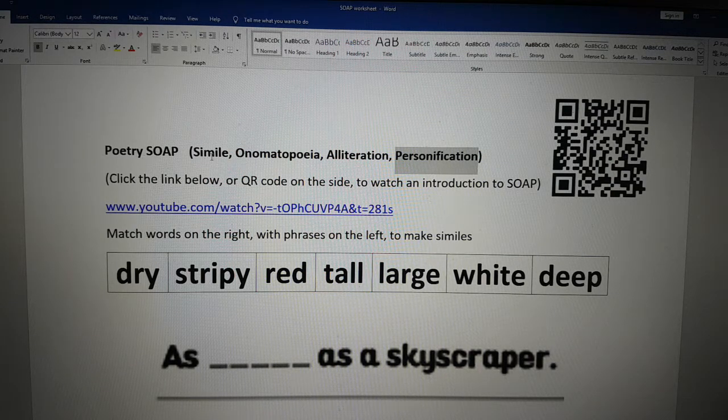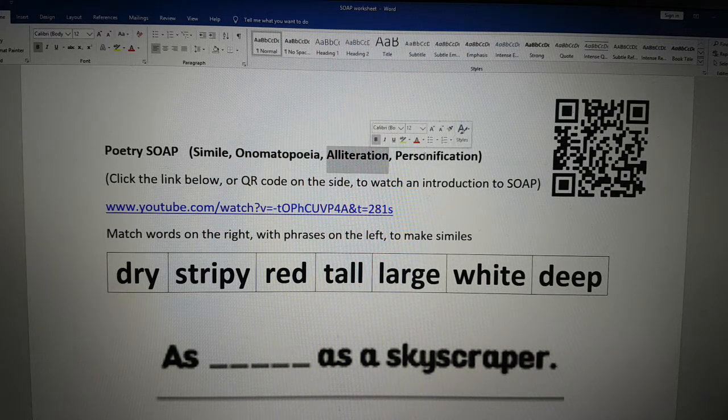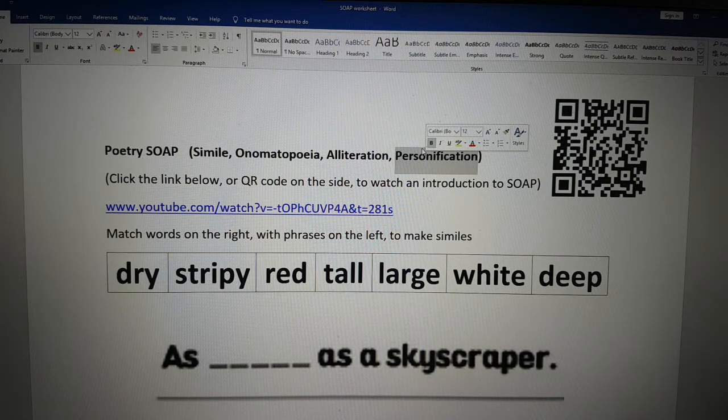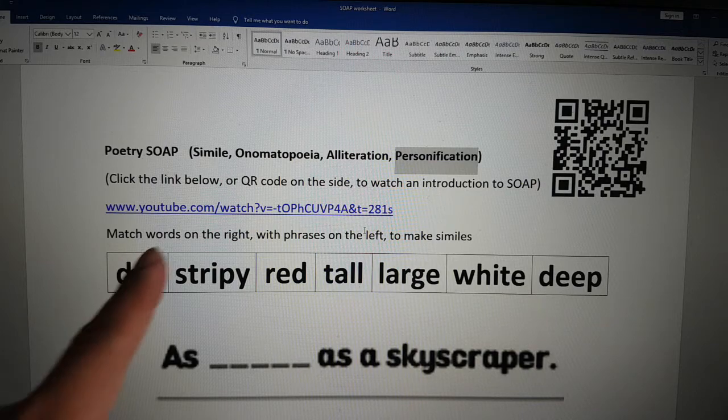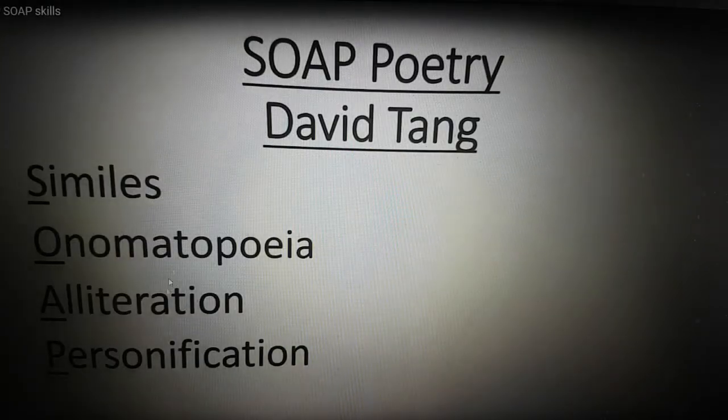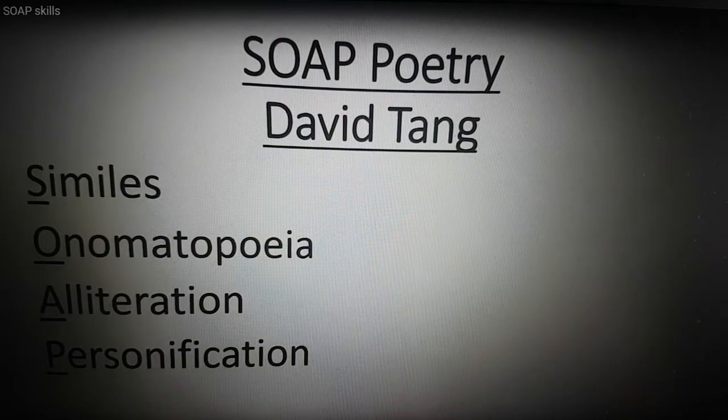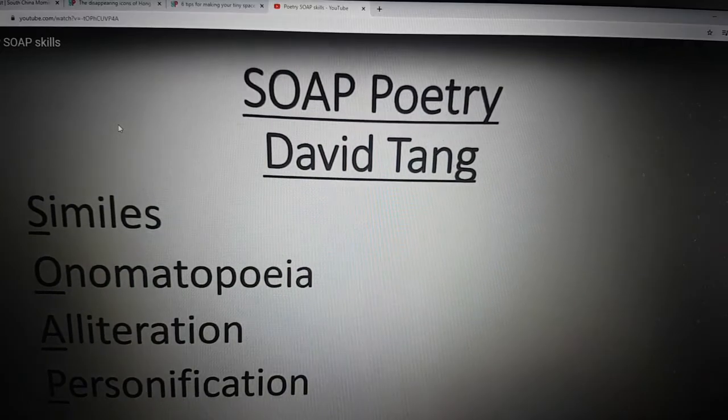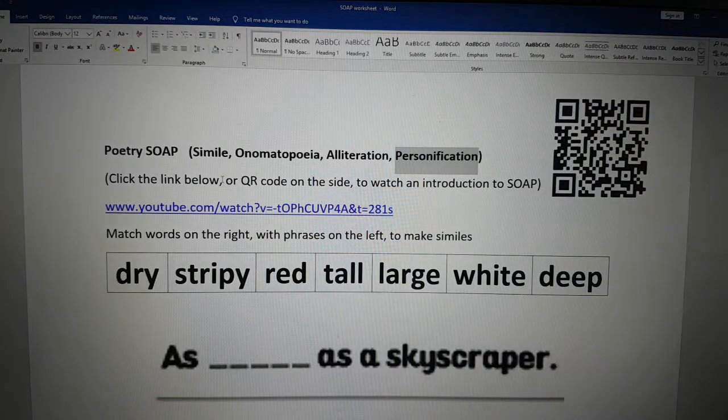If you still don't know what simile, onomatopoeia, alliteration and personification is, you can click on this QR code or this link which you will have on your worksheet. It will take you to a YouTube video, about 10 minutes long, that tells you more. So I suggest you have a look at that one first and then come back to this worksheet.